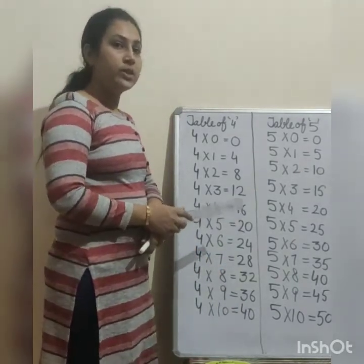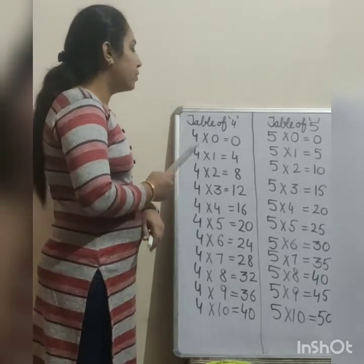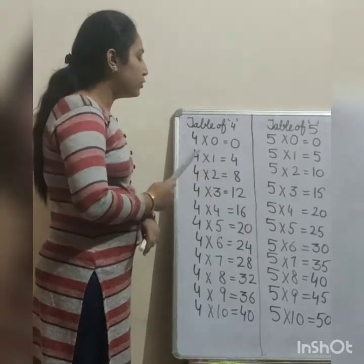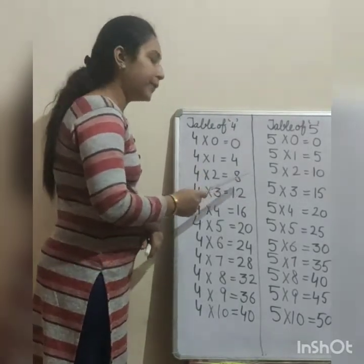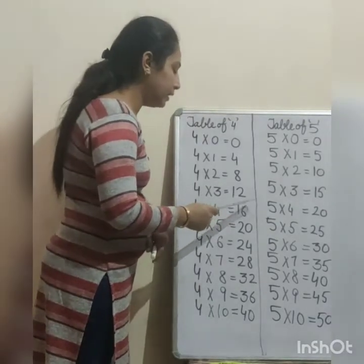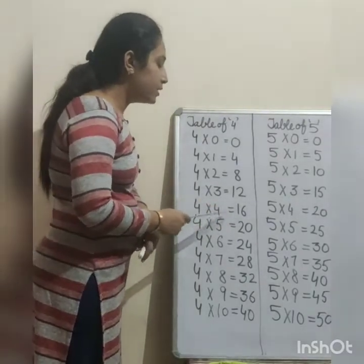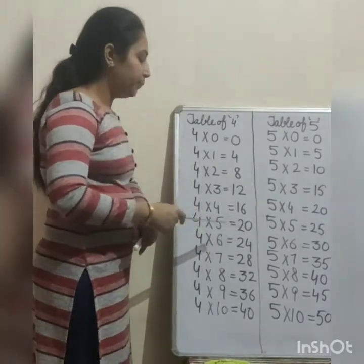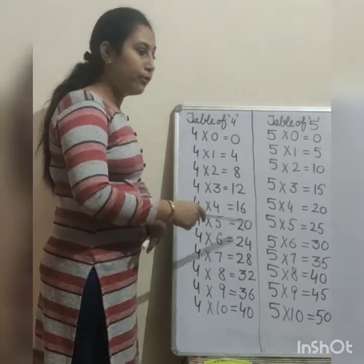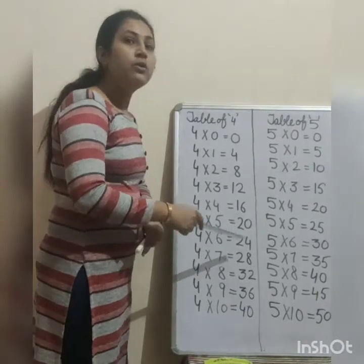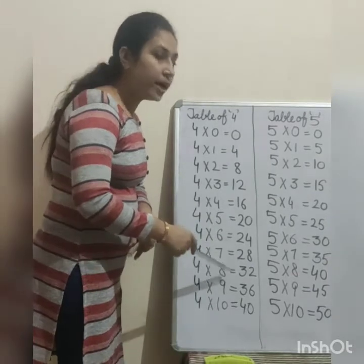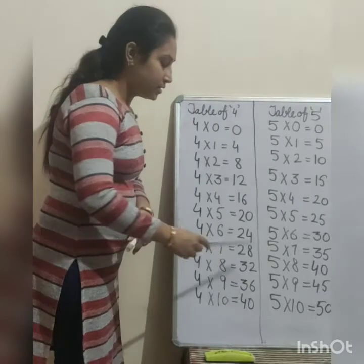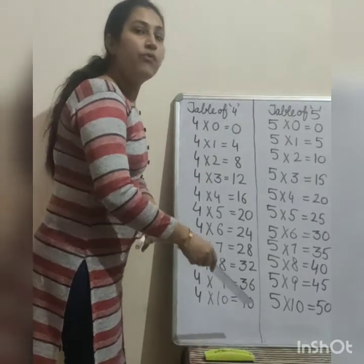Speak again. Speak with me. 4 zeros are 0, 4 ones are 4, 4 twos are 8, 4 threes are 12, 4 fours are 16, 4 fives are 20, 4 sixes are 24, 4 sevens are 28, 4 eights are 32, 4 nines are 36, 4 tens are 40.